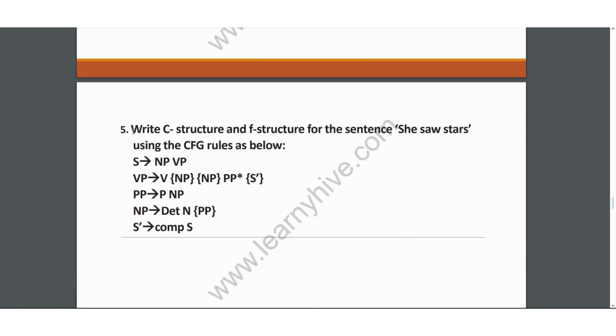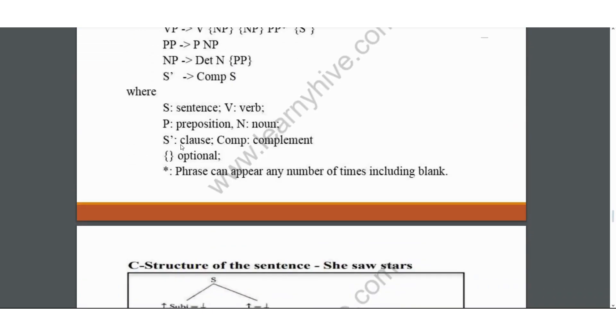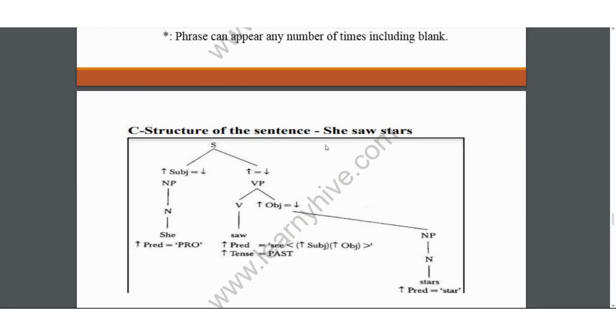Question number five: Write C-structure and F-structure for the sentence 'She saw stars' using the CFG rules as below. There are a few set of rules given which you are supposed to follow to convert C-structure into F-structure for the following sentence. The solution and explanation is also given in our video course. You can access it by clicking on the link in the description box.